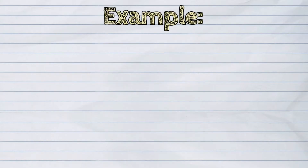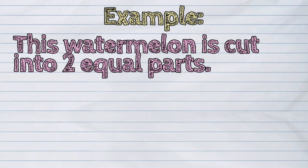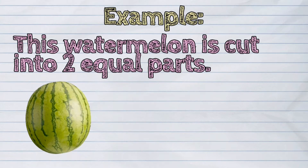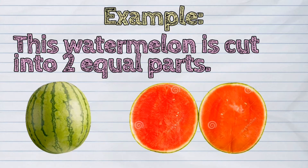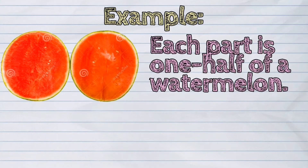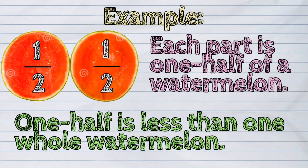Let us study this example. This watermelon is cut into two equal parts. Each part is one half of a watermelon. One half is less than one whole watermelon.